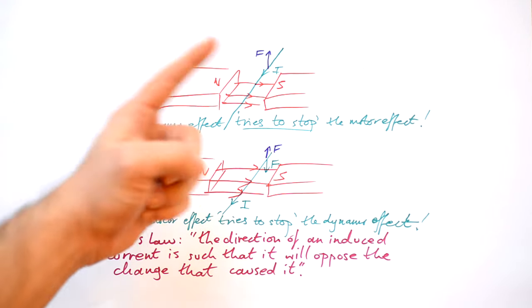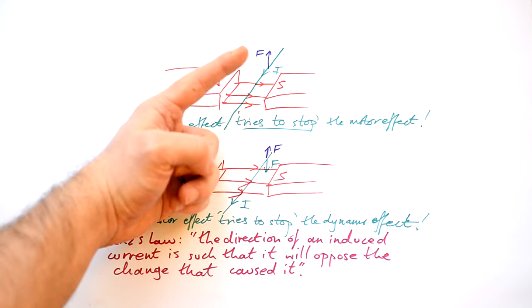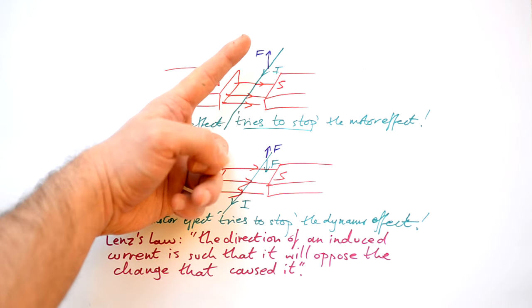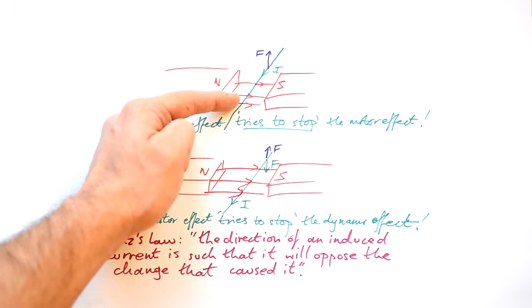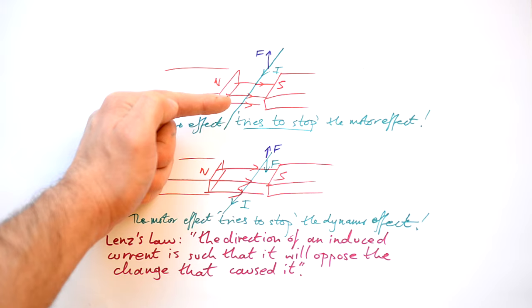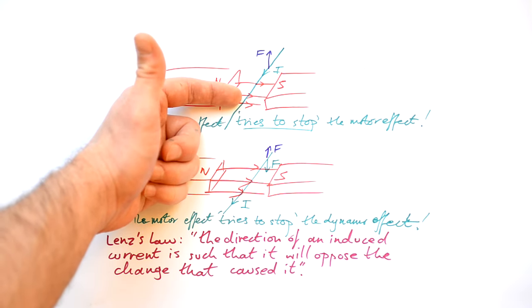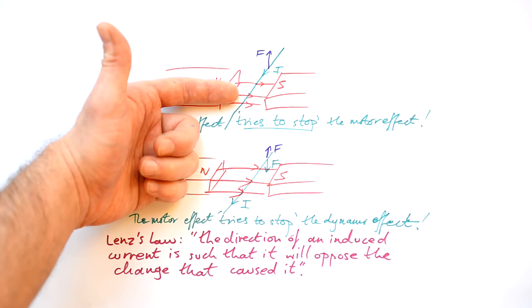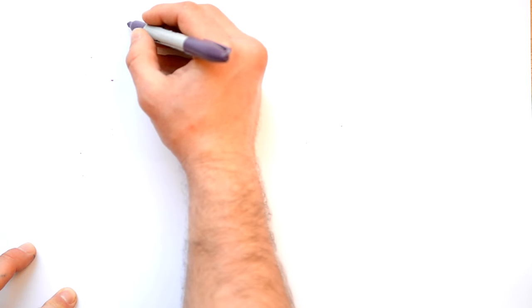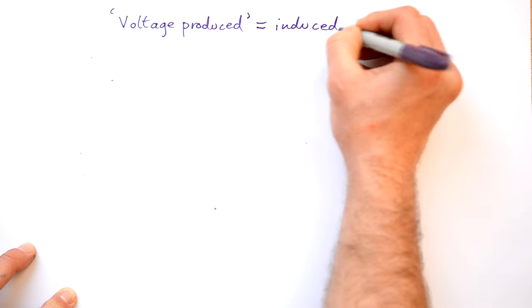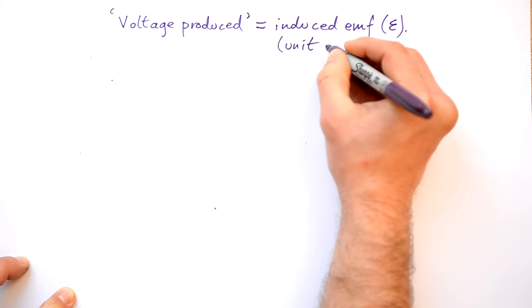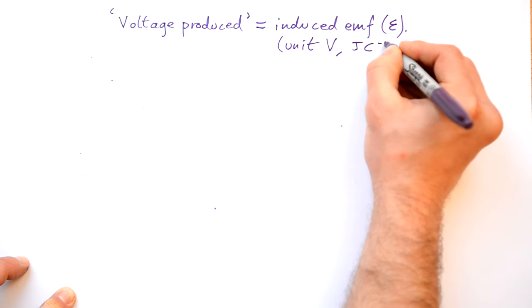Let's go back to our dynamo effect really quickly. That is forcing, that is supplying a force to a wire in a magnetic field so it cuts the magnetic field lines, and we get a current being produced in the wire as long as it's part of a complete circuit. If it's not part of a complete circuit then we will not have a current produced at all. So we know that current isn't the only thing that we're interested in — we're interested in the energy supplied to the electrons, or rather the number of joules supplied to each coulomb of charge. We're actually talking about the induced EMF, and it has the symbol epsilon. That does have the unit volts, but it's also the same as joules per coulomb.